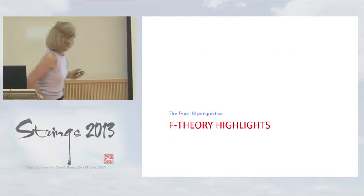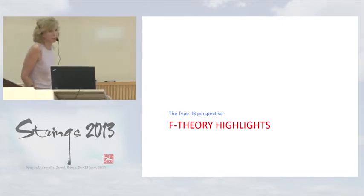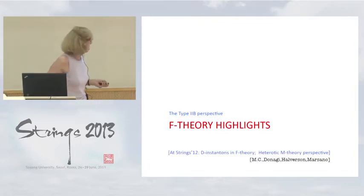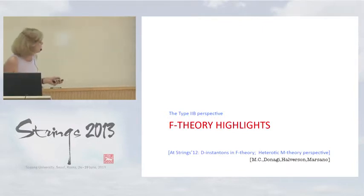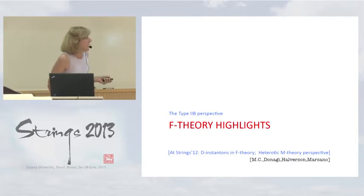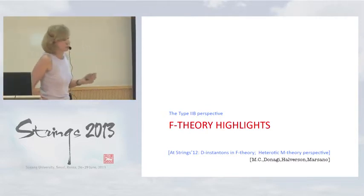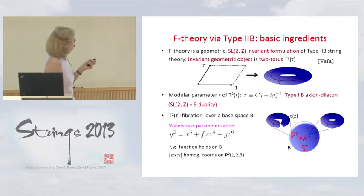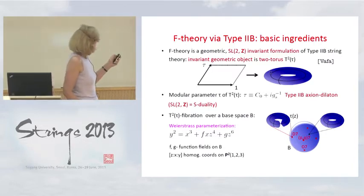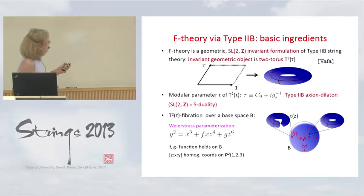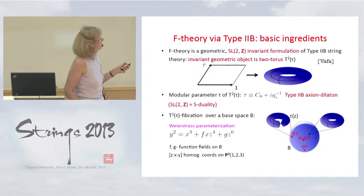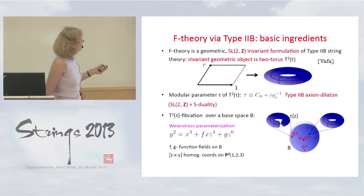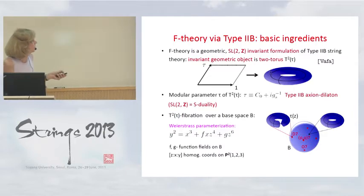Let me highlight a few core things about F-theory compactification from the type IIB perspective. In the F-theory formulation, the core geometric object is a torus. It is an SL(2,Z) invariant, allowing us to formulate type IIB string theory in SL(2,Z) invariant form, where the modular parameter of the torus specifies the axion-dilaton of the type IIB theory.